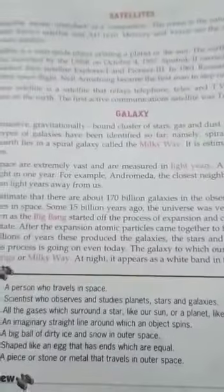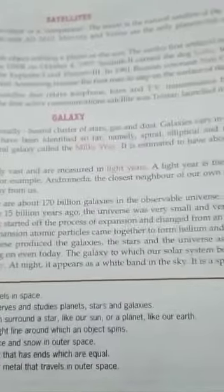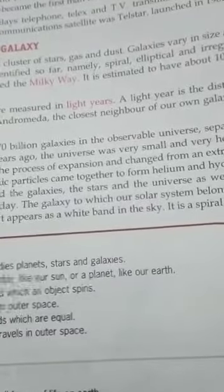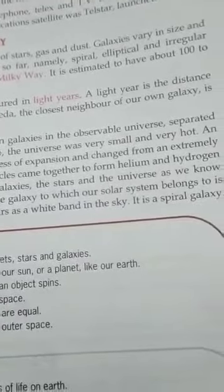Artificial satellite is a man-made object orbiting a planet or the sun.